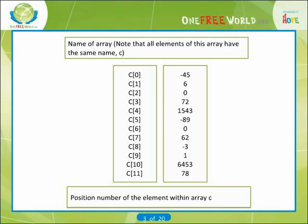In an n-element array, the array elements are x[0], x[1], x[2], x[3], through x[n-1]. The value of each subscript can be expressed as an integer constant, an integer variable, or a more complex integer expression.